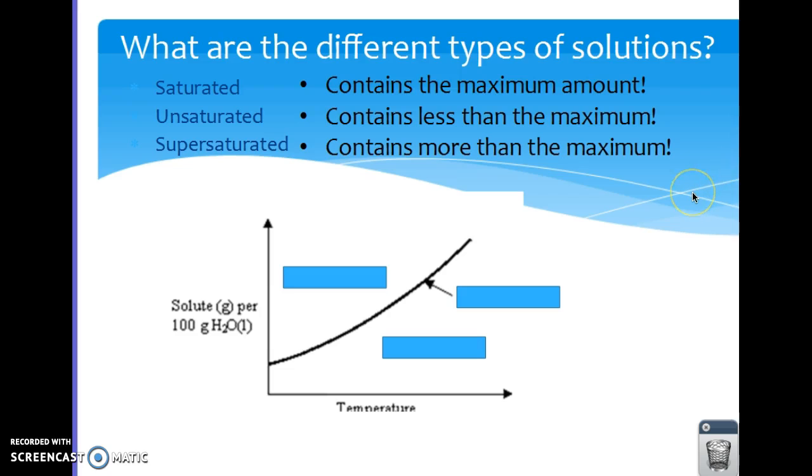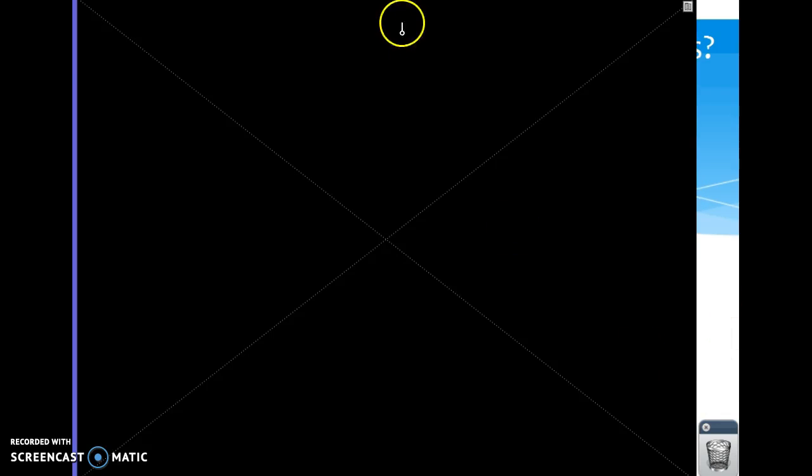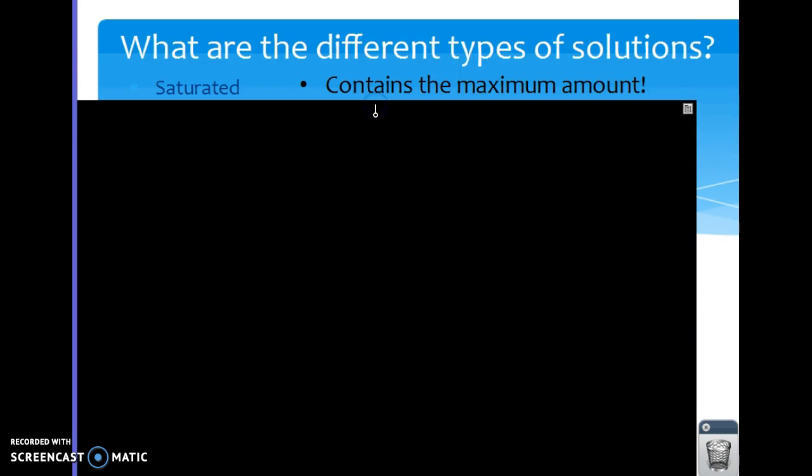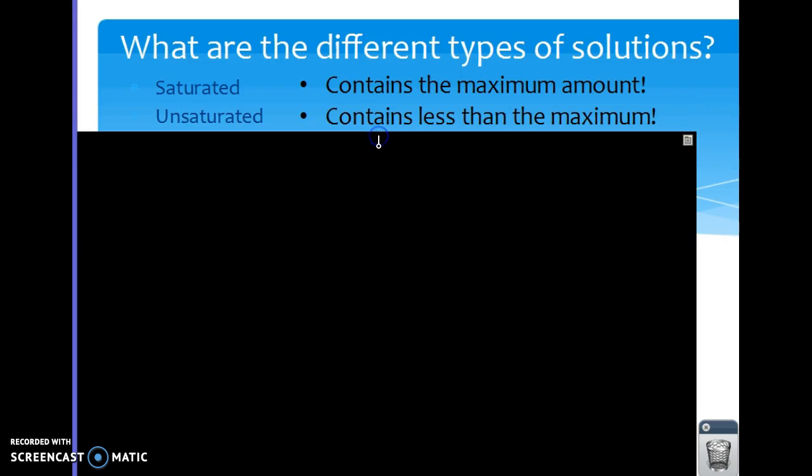There are different types of solutions that you need to remember. They are saturated, unsaturated, and supersaturated. So let's start with saturated. That means it contains the maximum amount of solute that it can hold at a given time. If something is unsaturated that means it has less than the maximum and can still hold some more.